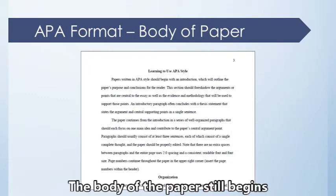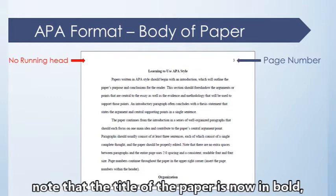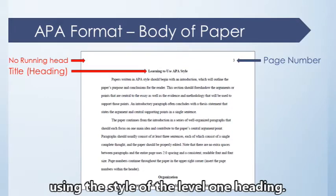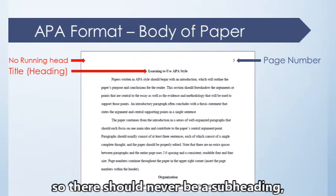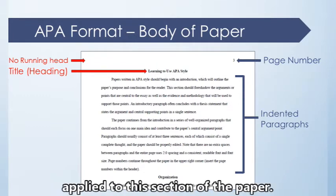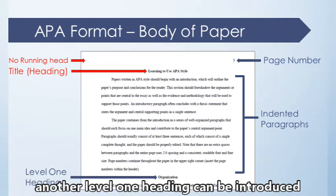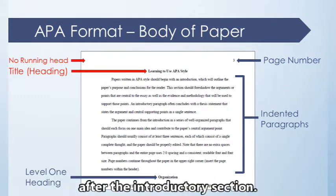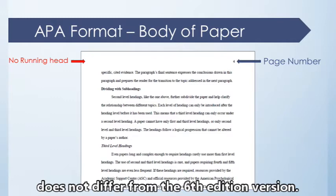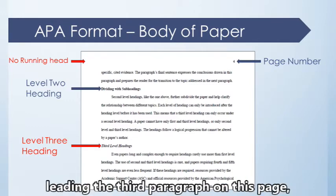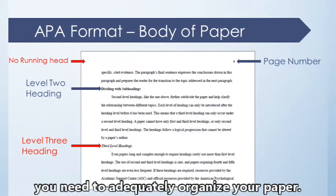The body of the paper still begins on a fresh page after the abstract. In addition to the absence of a running head, note that the title of the paper is now in bold, using the style of a Level 1 heading. This title is now officially considered a heading in the paper, so there should never be a subheading such as 'introduction' applied to this section. If further headings are needed, another Level 1 heading can be introduced after the introductory section. Note that heading levels should only be used as needed to adequately organize your paper.